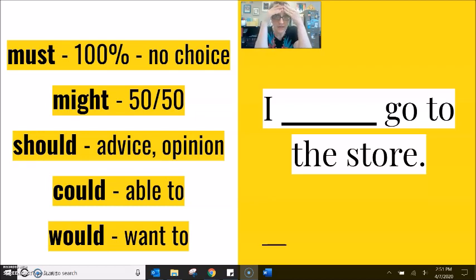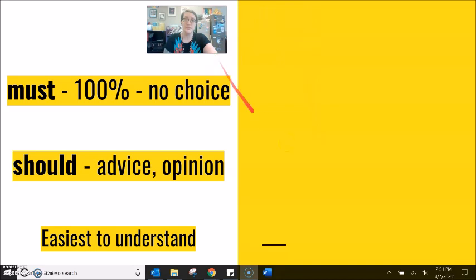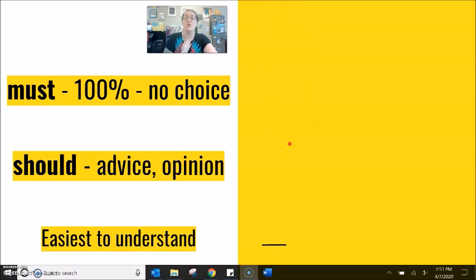How is your brain feeling? These are very difficult to navigate, to use correctly in a sentence because they feel so much similar sometimes. Must, must is easy. And I think should is easy. Must, a hundred percent. There is no choice. Should, a good idea, but you can choose. I think these two are the easiest to understand.